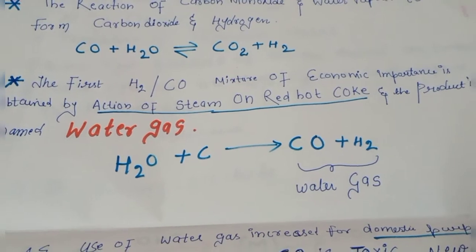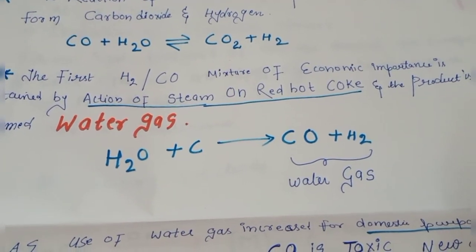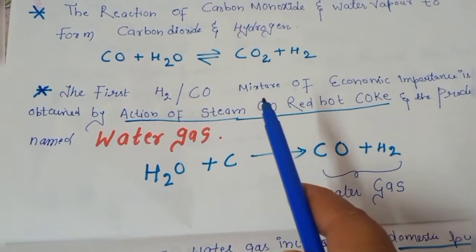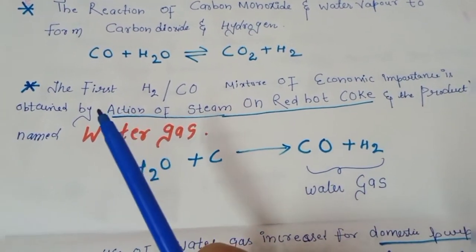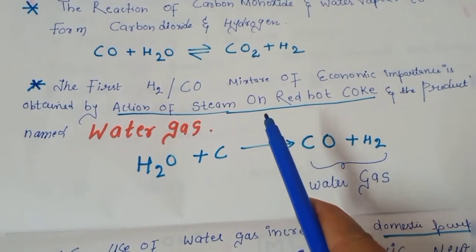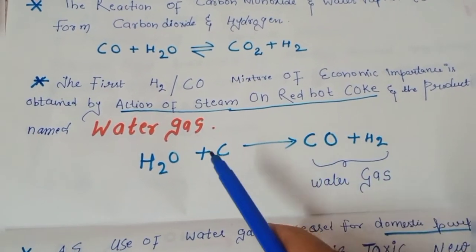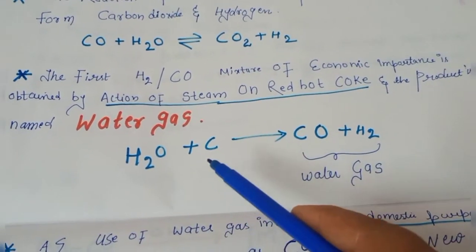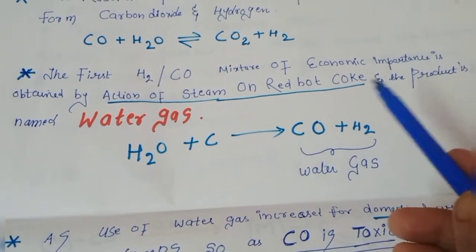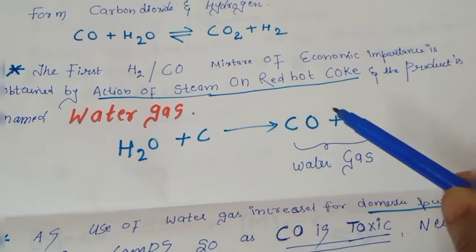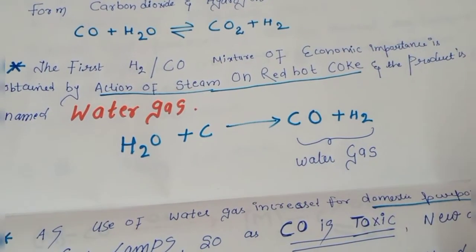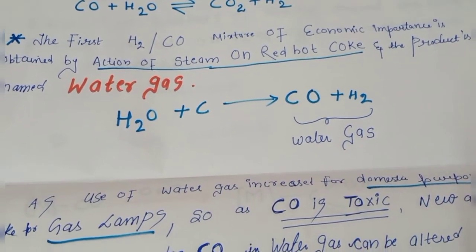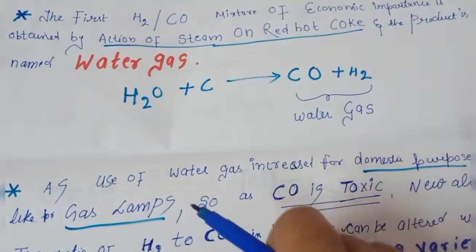Now later on, the first water gas mixture of economic importance is obtained by the action of steam on red hot coke. So first when we obtained the water gas, it was the action of steam on the red hot coke, and the product is named as the water gas. This mixture of carbon monoxide plus H2 is termed as the water gas, as we are using steam here.